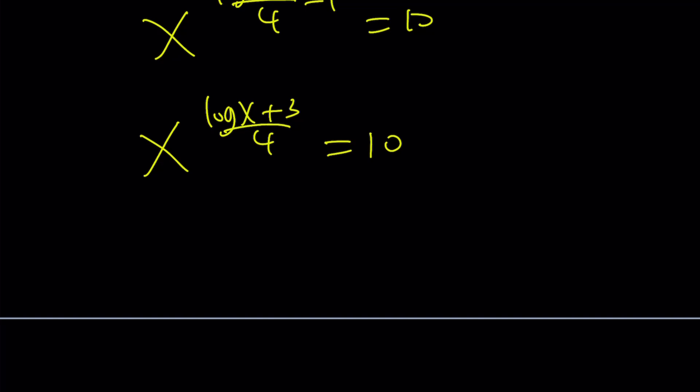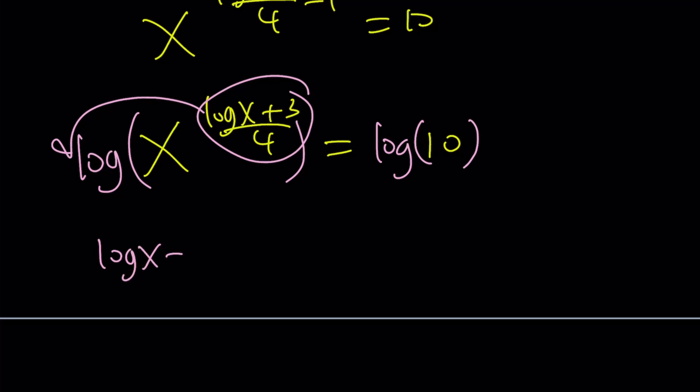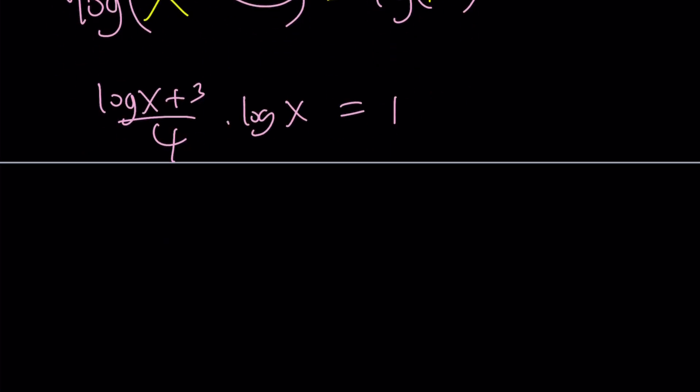At this point, it will be helpful to log both sides. Log here and log here. This guy is going to move to the front: log x plus 3 over 4 times log x equals 1, because log 10 is 1. Then calling this t: t plus 3 times t equals 4. T squared plus 3t minus 4 equals 0.